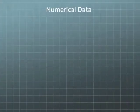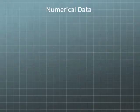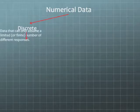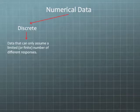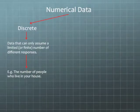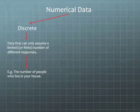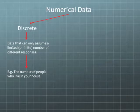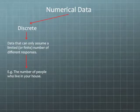The second type of data is numerical data. Numerical data is any data that is represented by real numbers. There are two types of numerical data. The first type is discrete. Discrete data is data that can only assume a limited or finite number of different responses. For example, the number of people who live in your house will produce a limited or finite number of different responses — you might have 1, 2, 3, 4, 5, 6, 7, and so on. You may not have 2.25 or 4.19 or 7.84 people living in your house. People are represented by whole numbers, so we can assume a limited or finite number of different responses.